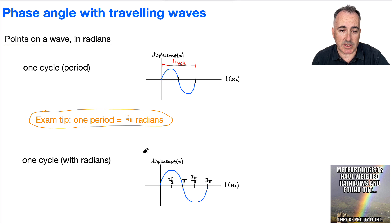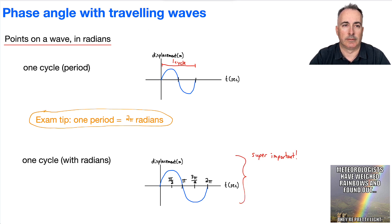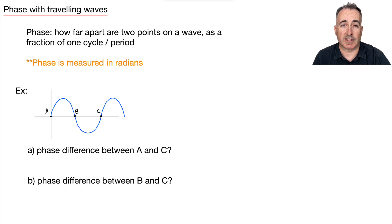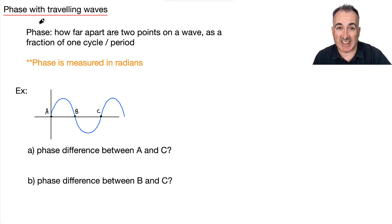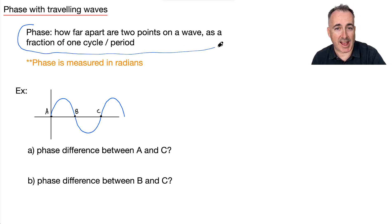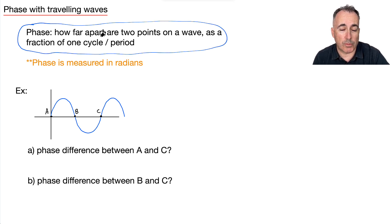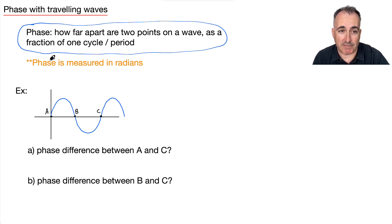This is the piece I need you to know — it's super important. So if we want to consider the phase difference with traveling waves, it's how far apart two points are as a fraction of a whole cycle or a whole period. And remember, phase is going to be measured in radians.